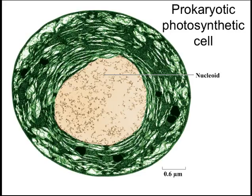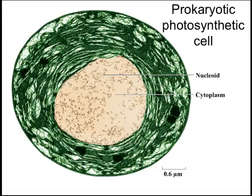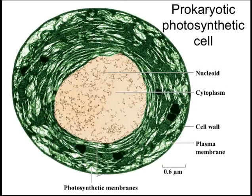This is another prokaryotic cell — a photosynthetic bacteria called Prochloron. You can see the nucleoid, or the region where the DNA is. The green color is from the pigments used for photosynthesis. It also has cytoplasm, a cell wall for protection, and inside, a plasma membrane. You can see that these infoldings are caused by infoldings of the plasma membrane to increase the surface area for holding the proteins necessary for photosynthesis and isolating those reactions.